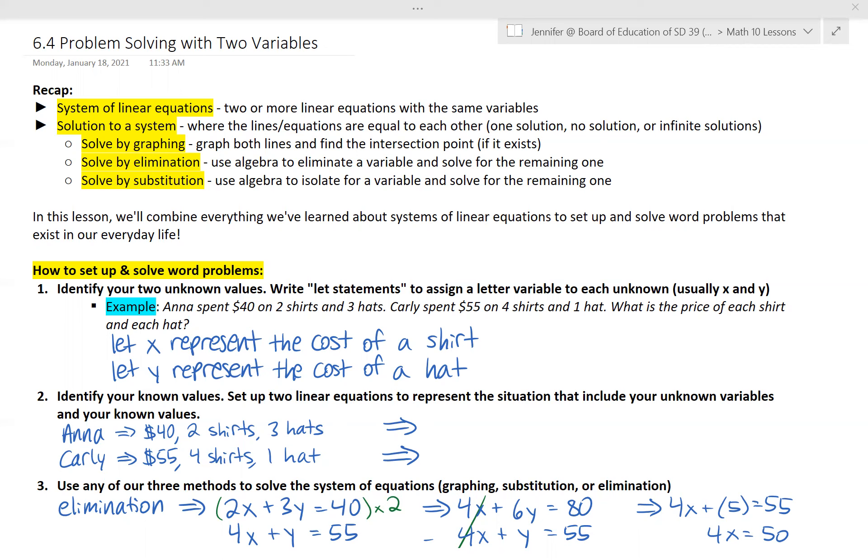The next step is identify your known values. What do you know? And then you want to use this information to set up two linear equations to represent the situation. So what we do know is that Anna spent a total of $40 and got two shirts and three hats. We also know that Carly spent $55 on four shirts and one hat. So how can we take this information with our two new variables x and y and put these into linear equations that we can then solve. We're going to want to write one equation for Anna and one equation for Carly because they have two different situations there.